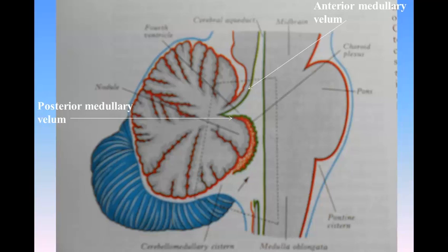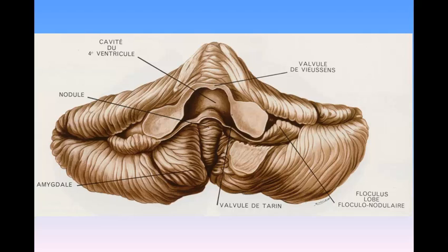Roof or dorsal wall: The upper portion of the roof is formed by the superior peduncle and the anterior medullary velum. The lower portion is formed by the posterior medullary velum, the epithelial lining of the ventricle covered by the tela choroidea inferior, the taeniae of the fourth ventricle, and the obex.